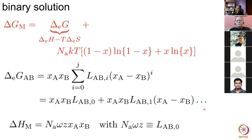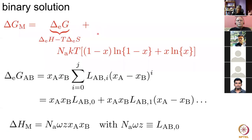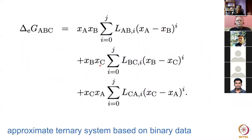When it comes to ternaries, there are fewer thermodynamic data available. One trick is to take the three binary systems — A-B, B-C, and A-C — and simply combine them. We have three binary phase diagrams and we combine these terms to represent the excess free energy of a ternary system. Again, if some terms are modified you don't need to modify all the others.